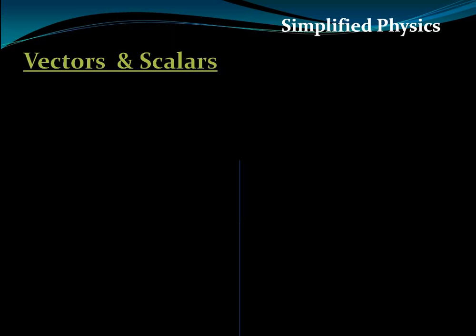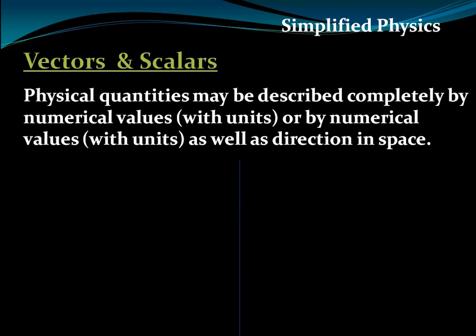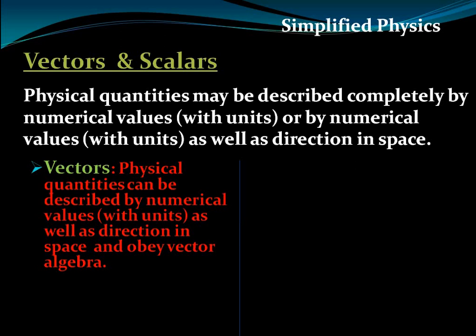Vectors and scalars. Physical quantities can be completely described with magnitude and direction. Some categories of physical quantities can be completely described only with magnitude. So physical quantities may be of two categories on the basis of their representation. Some physical quantities can be completely described with a numerical value — that means magnitude with units — and some physical quantities require direction as well.